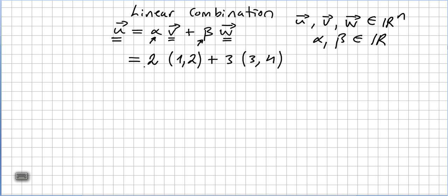So the question here is, what is the vector u here that is a linear combination of these two vectors? So here we are saying that vector v is (1,2) and vector w is the vector (3,4).